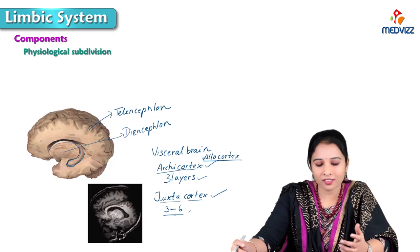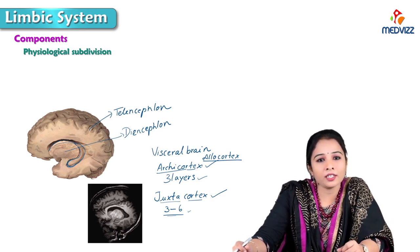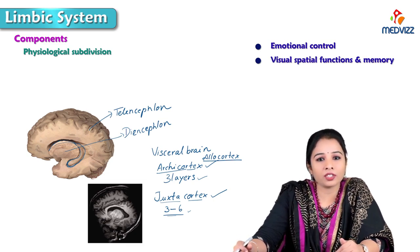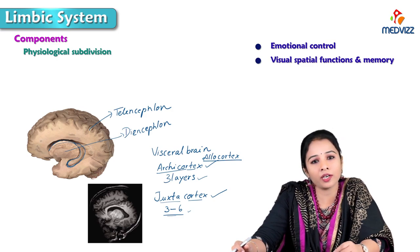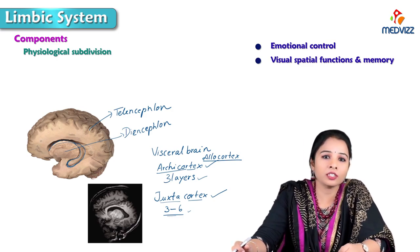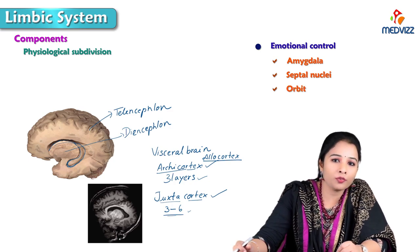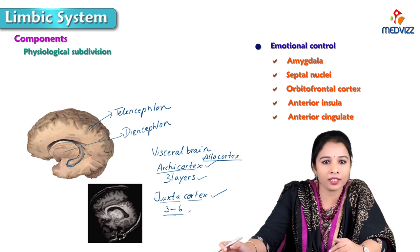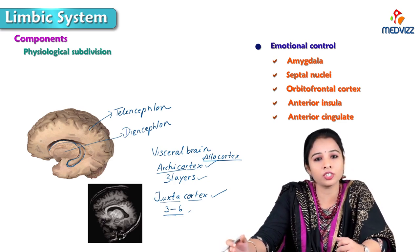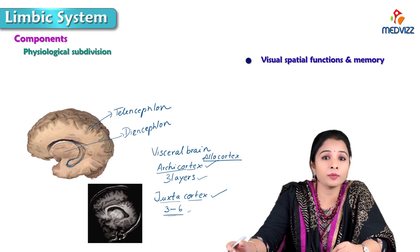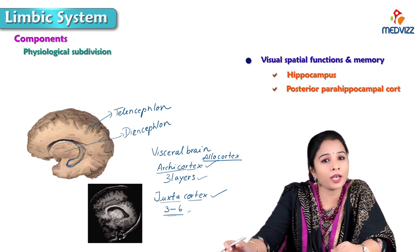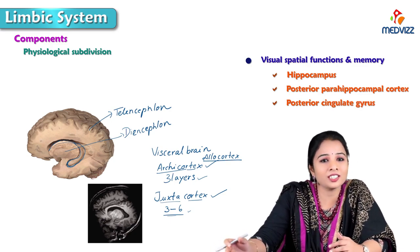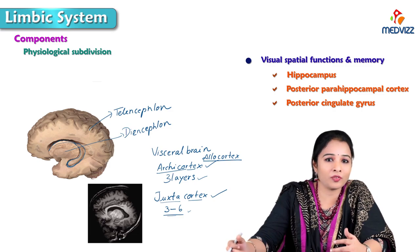Physiologically, the limbic system is subdivided into emotional control and visual-spatial functions and memory. Emotional control is by the amygdala, septal nuclei, orbitofrontal cortex, anterior insula, and anterior cingulate gyrus — all under emotional control. Visual-spatial functions and memory are managed by the hippocampus, posterior parahippocampal cortex, and posterior part of the cingulate gyrus.